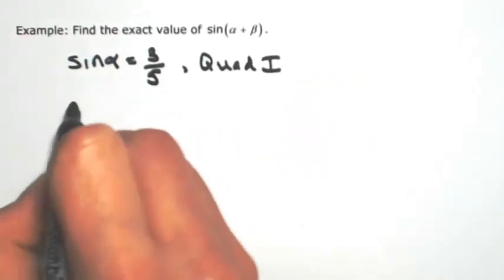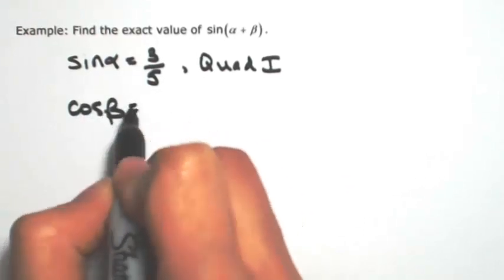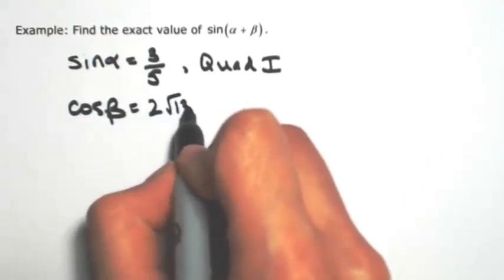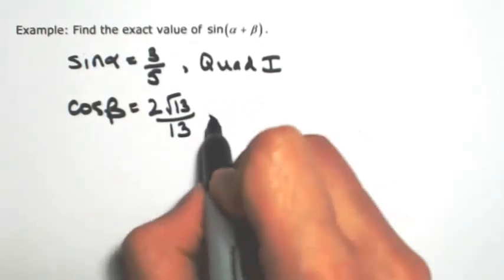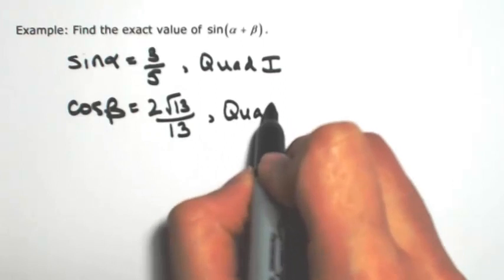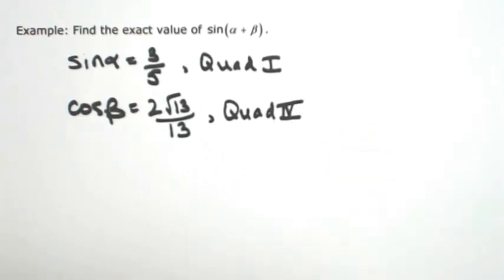And then you're told that the cosine of beta is 2 root 13 over 13. Again, you need to know where this is taking place, so this is quadrant four. So from this information, we're going to find the sine of alpha plus beta.